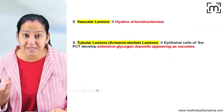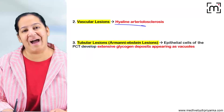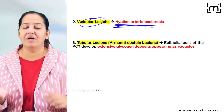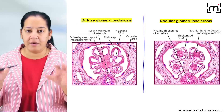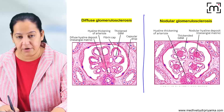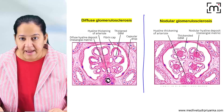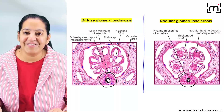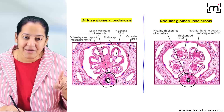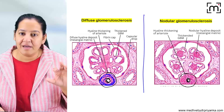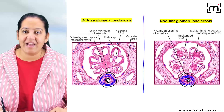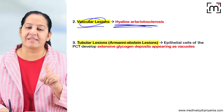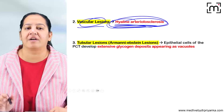Now let's see the vascular changes. In the blood vessels, hyaline gets deposited in the media. Blood vessels have three layers: intima, media, and externa. The pink acellular hyaline deposit in the media is the same in both diffuse and nodular patterns. This is called hyaline arteriosclerosis, and there is no difference in blood vessel involvement between the two patterns.